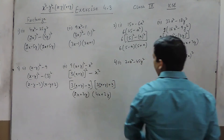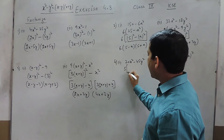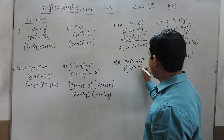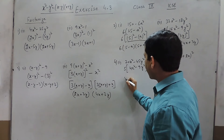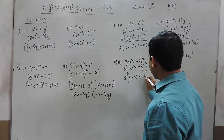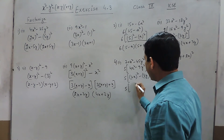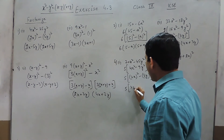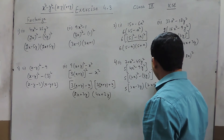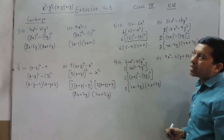If we solve this again, 20x square is not a perfect square. We have to take 5 as common, giving 5 times 4x square minus 9y square. This can further be written as 2x whole square minus 3y whole square. So 5 can be taken as common, and the factors are 2x minus 3y and 2x plus 3y.